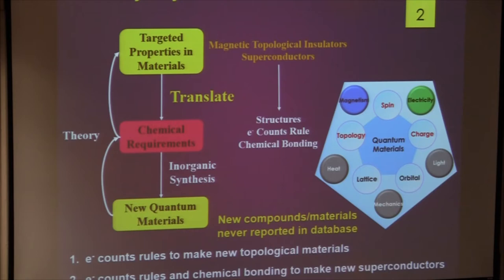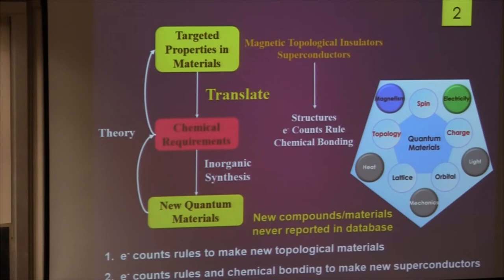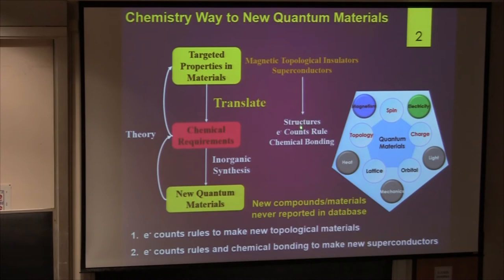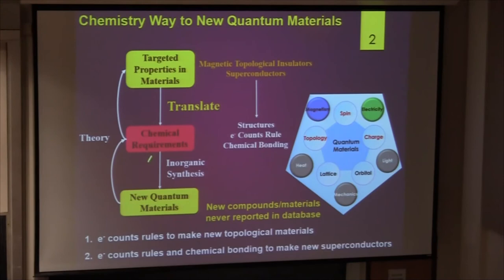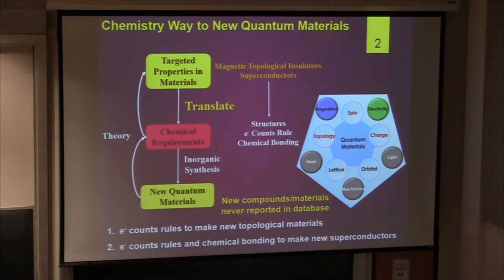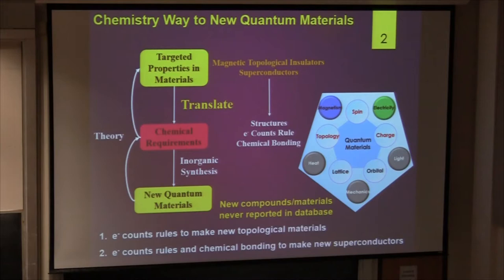So how can we come up with these ideas? Usually we have targeted properties — for example, topological insulators or superconductivity. We try to translate the concept of physics into chemical requirements, such as structure, electron counting rules, or chemical bondings. Then we use inorganic synthesis methods like flux growth, vapor transport, to make the new material. After making it, we calculate the electronic structure, understand the properties, and modify our chemical requirements for future studies. This is our loop.